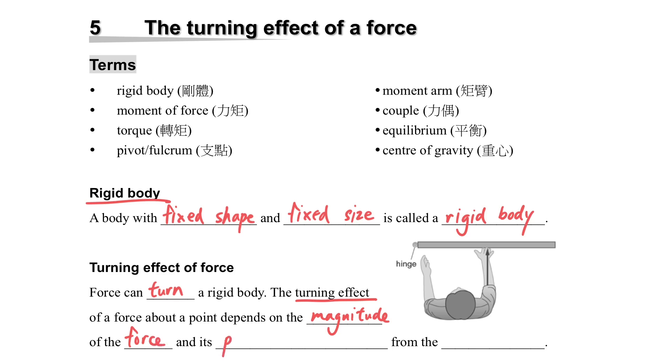And the turning effect is related to the magnitude of the force and the perpendicular distance from the turning point. So, for example, in the figure, you can see there is a door with a hinge and someone pushing it. So there is a force, and then there is a perpendicular distance.